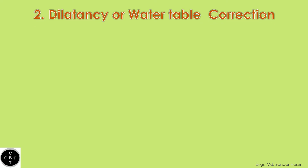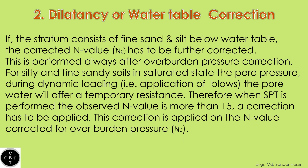Now let's talk about dilatancy or water table correction. If the stratum consists of fine sand and silt below the water table, the corrected N value has to be further corrected. This is performed always after overburden pressure correction. For silty and fine sandy soils in a saturated state, the pore pressure during dynamic loading means pore water will offer a temporary resistance. Therefore, when SPT is performed and the observed N value is more than 15, a correction has to be applied on the N value corrected for overburden pressure, Nc.